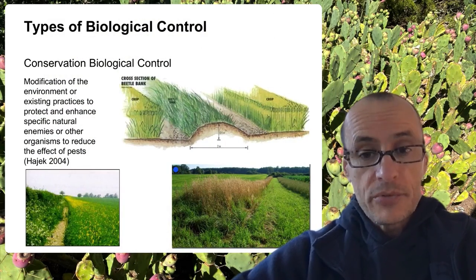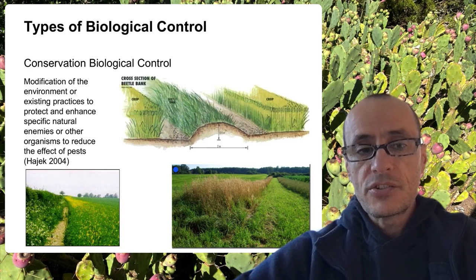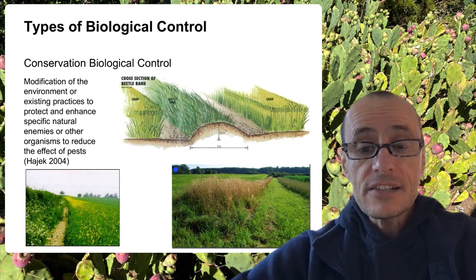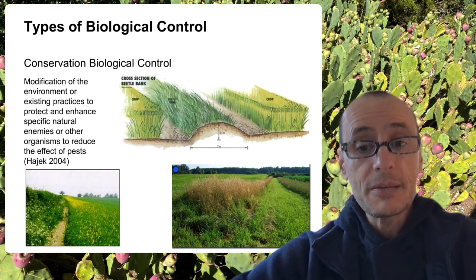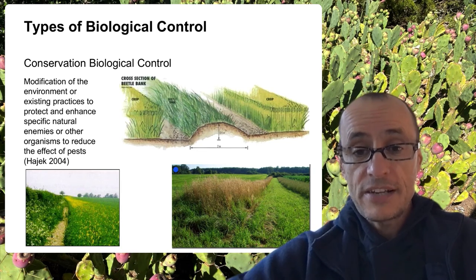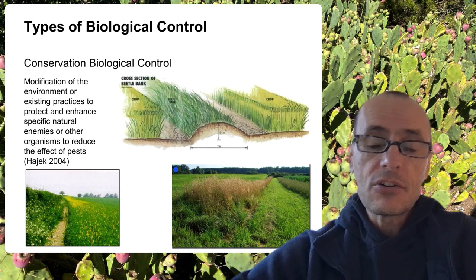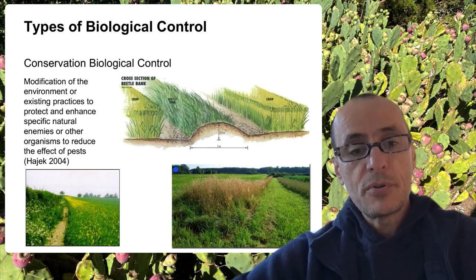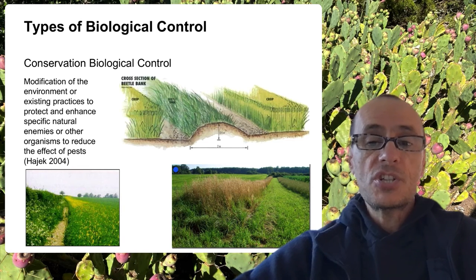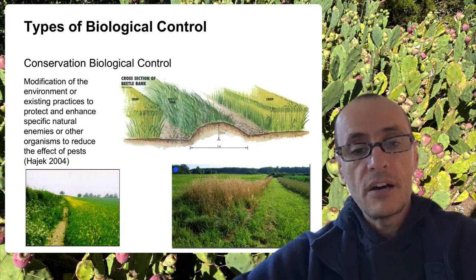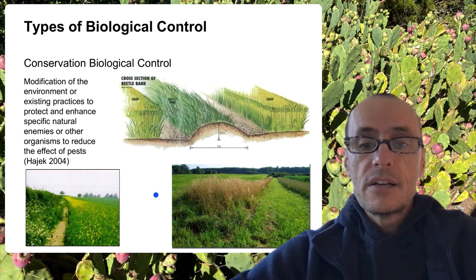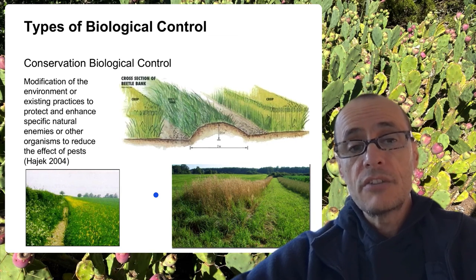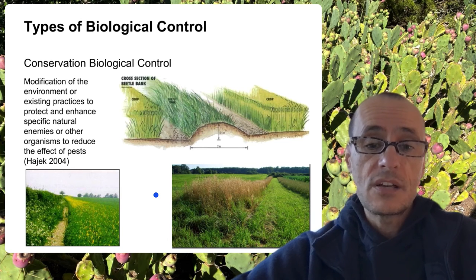The final category of biological control is conservation biological control. This is the idea that there are potential antagonists of pests — natural enemies already in the environment that would normally suppress pest populations — but that we've created agricultural environments that are very inhospitable to them. By enhancing their ability to survive, reproduce, and maintain themselves, we give them a chance to suppress the pests we don't want. In the podcast for this week, my colleague Doug Landis talks about this particular kind of conservation biological control and the various ways in which it's actually practiced.